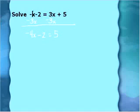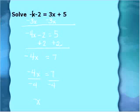Now it looks like the last problem we did, where we take care of the addition or subtraction first. So I'm going to add 2 to both sides — the 2 is being subtracted, so I'm going to add it to the other side. I'll have negative 4x remaining on the left side, and 5 plus 2 gives me 7 on the right. Now I'll divide both sides by negative 4. The negative 4s will cancel, and I get x equal to 7 divided by negative 4, or negative 7 fourths.